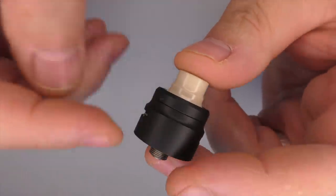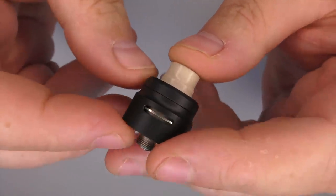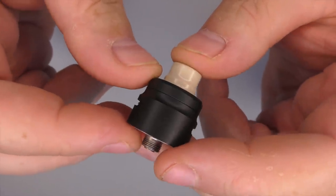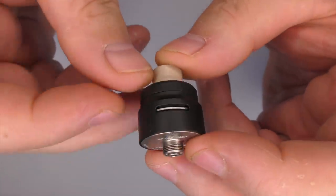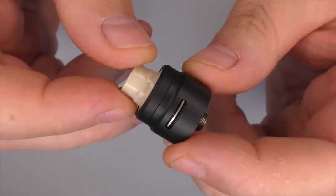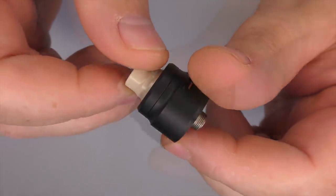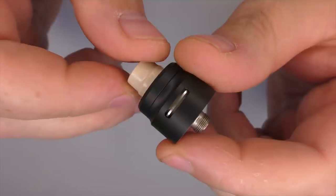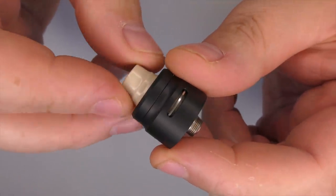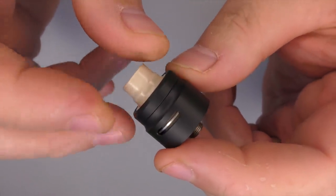And the air hole that we have here is slightly bigger than the OG because that was 7.5 by 2 on the OG one, but this one is 10.5 by 2 millimeters. More space on the build posts as well, so you can put your bigger coils in there like Claptons and so on.